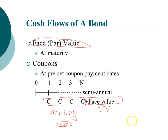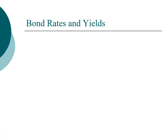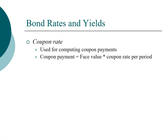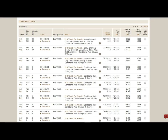There are differences among the types of interest rates associated with a bond. The first is the coupon rate. The coupon rate is not the discount rate — it is only used for computing coupon payments. Once you know the face value, you can figure out the coupon payment based on the coupon rate.